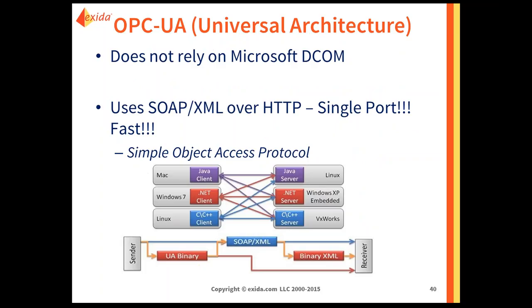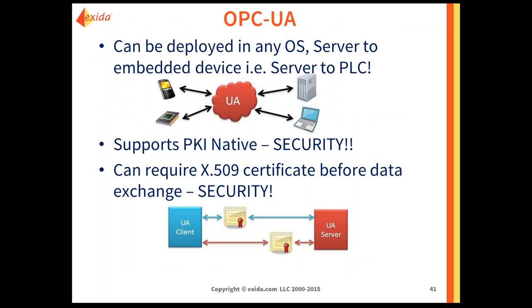That dynamic port behavior makes firewalling OPC Classic very difficult until new technologies solved it. One new technology — not yet adopted in industrial control systems — is OPC UA, or Universal Architecture. OPC UA does not rely on Microsoft's DCOM, so it can run on almost any platform, unlike OPC Classic which was dedicated to the Microsoft platform. OPC UA uses SOAP and XML over HTTP, is a single port, fast, device agnostic, and has security, encryption, and redundancy built in — a very robust and secure technology.